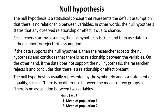The null hypothesis is usually represented by the symbol H0 and is a statement of equality, such as there is no difference between the means of two groups, or there is no association between two variables. H0 is: μ1 equals μ2, where μ1 is the mean of population 1 and μ2 is the mean of population 2.